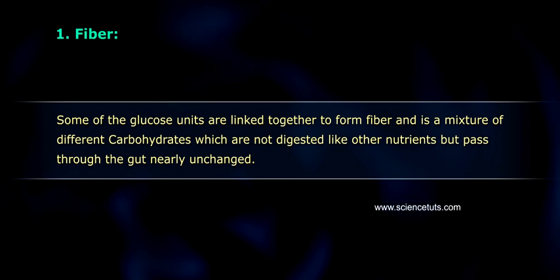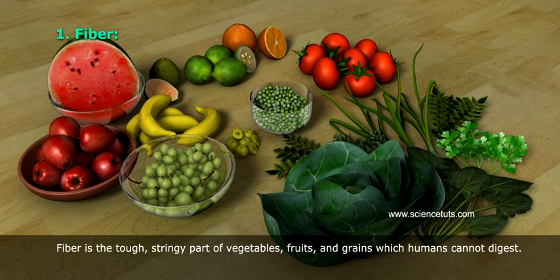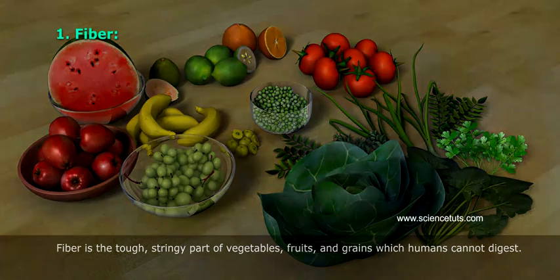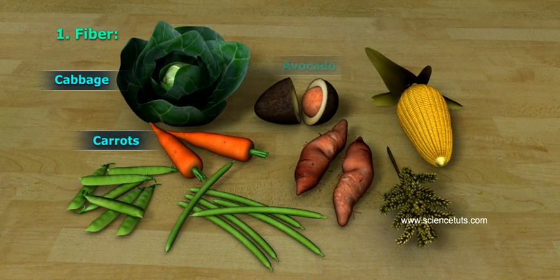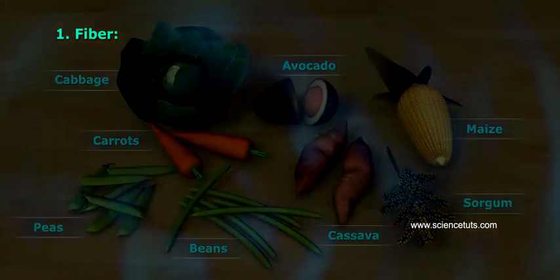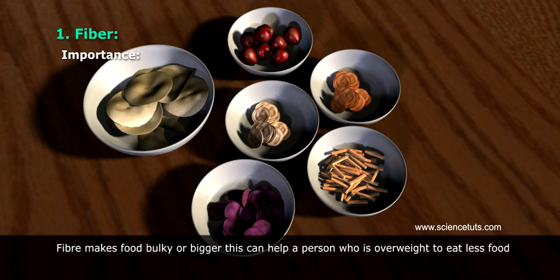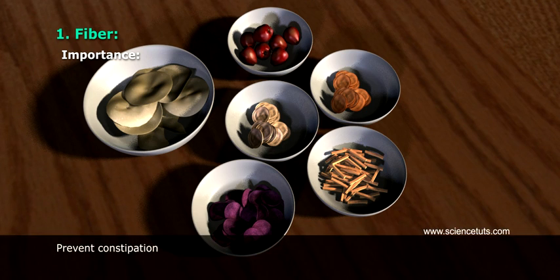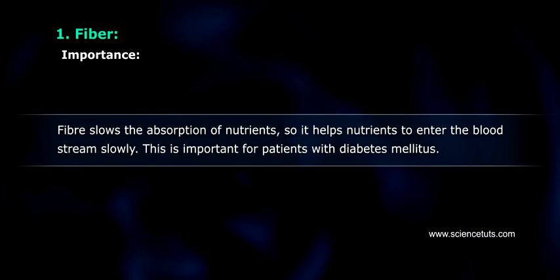Fiber: Some glucose units are linked together to form fiber. It is a mixture of different carbohydrates that are not digested like other nutrients but pass through the gut nearly unchanged. Fiber is the tough, stringy part of vegetables, fruits, and grains which humans cannot digest. Sources include carrots, cabbage, avocado, maize, sorghum, beans, peas, and cassava. Importance: Fiber makes food bulky, helping overweight persons eat less. It prevents constipation and slows the absorption of nutrients into the bloodstream, which is important for patients with diabetes mellitus.